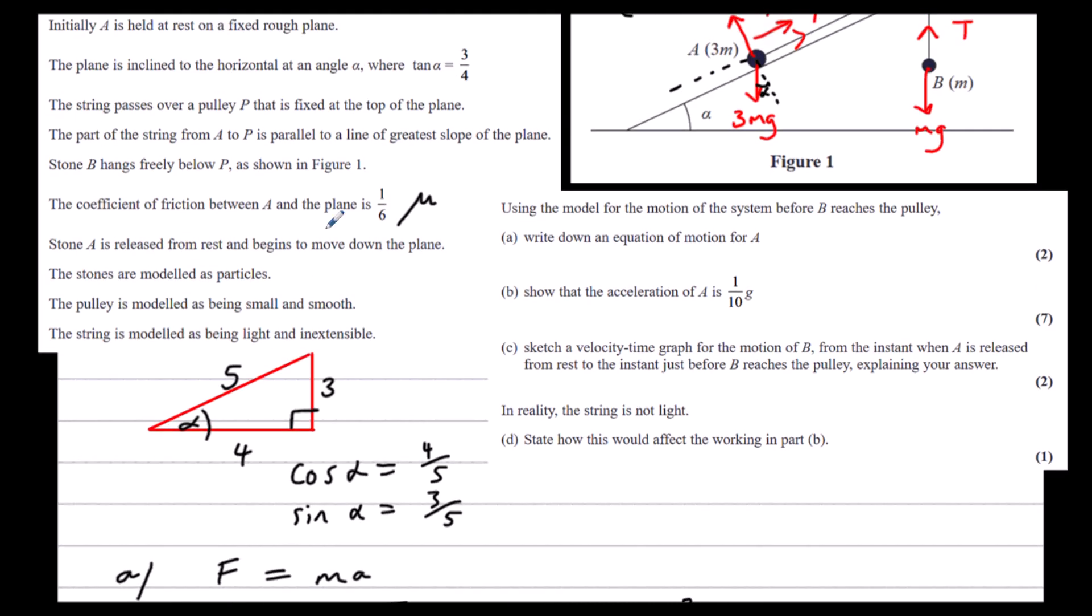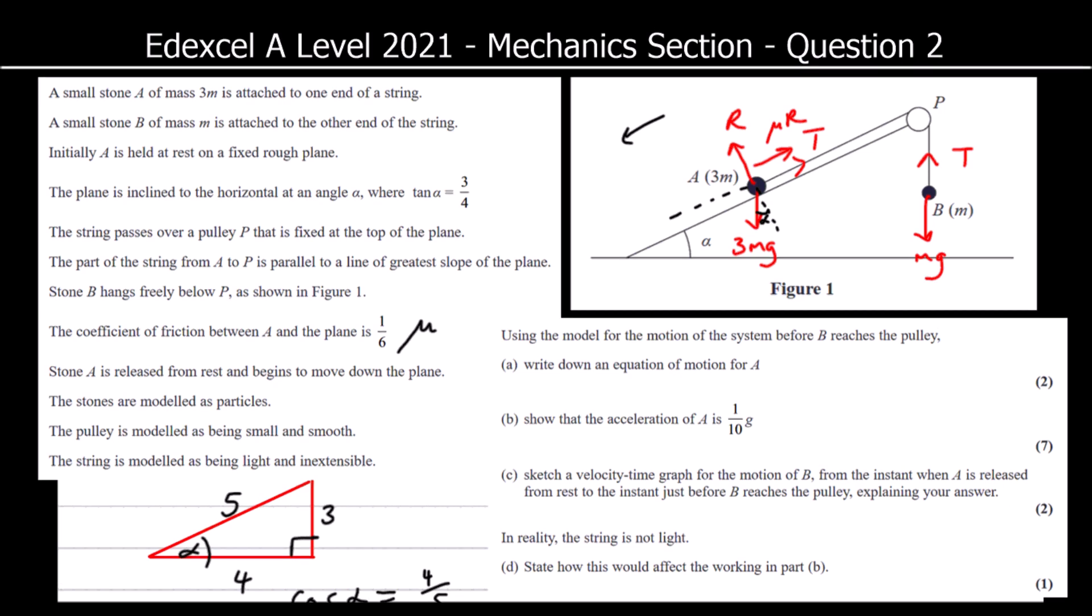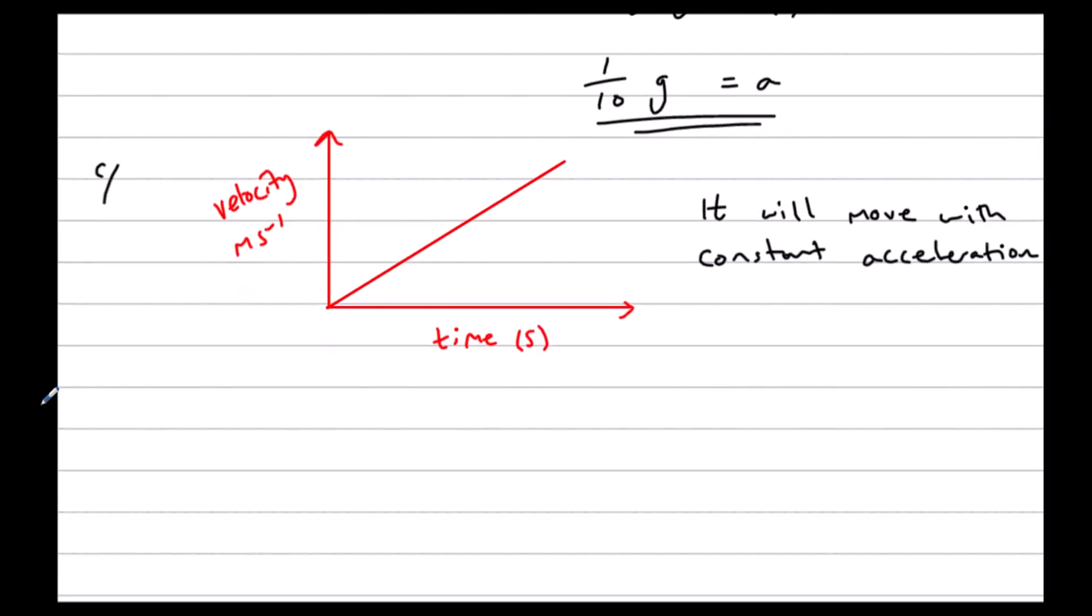And part D. In reality, the string is not light. State how this would affect the working in part B. So the reason we use the modeling assumption that a string is light is so the tension is the same in both parts of the string. So if it wasn't light, the tension would not be the same in both parts of the string.